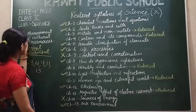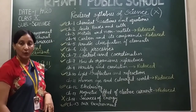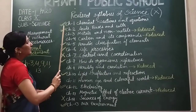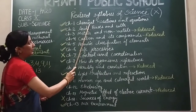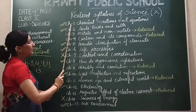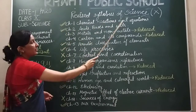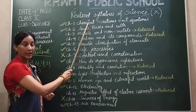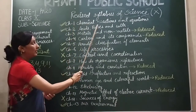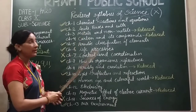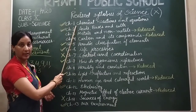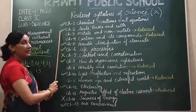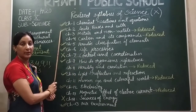Chapter number 1 of chemistry: Chemical Reactions and Equations. There is no reduction in this chapter — all topics remain as they are. Chapter number 2 is Acid, Bases and Salts. There is no reduction in this chapter either.